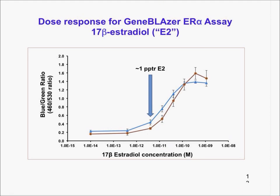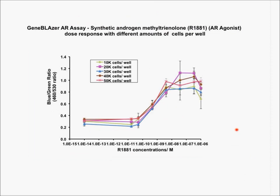The next one is the androgen assay. This is showing some of the modifications we made in terms of cell numbers to optimize. This is not as sensitive as the estradiol receptor — you don't start seeing really significant signaling until about 10⁻⁹, which is about an order of magnitude off from where we see estradiol. What this means is that the extract we are using may have to be modified and perhaps more concentrated to measure androgenic activity.